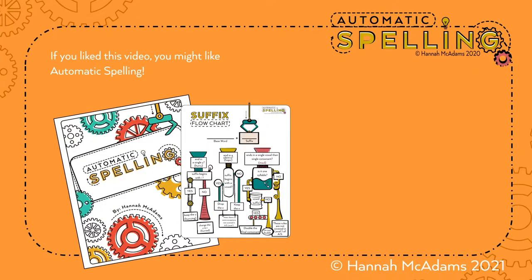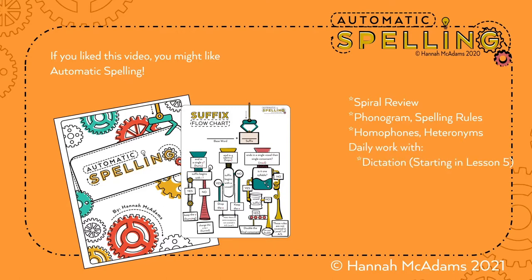If you liked this video, you might like Automatic Spelling. Automatic Spelling is unique because it uses Spiral Review every single day. We have phonograms, spelling rules, homophones, heteronyms, daily work with dictation, suffixes, plurals, and possessives, editing, and more.